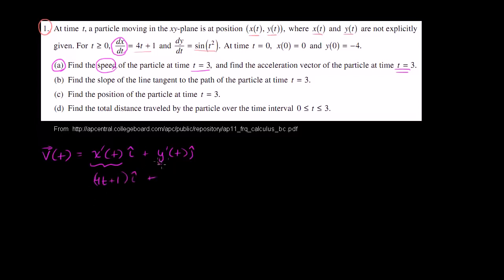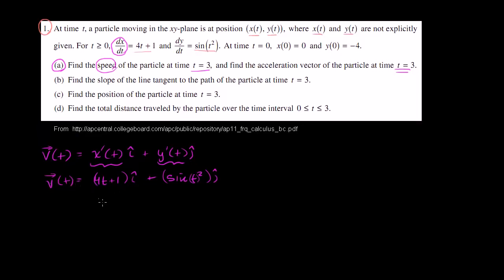And then y prime of t, they gave it to us: the derivative of y with respect to t is sine of t squared. So plus sine of t squared times the j unit vector. That is our velocity vector as a function of time. So what is our velocity vector at time t equals 3?